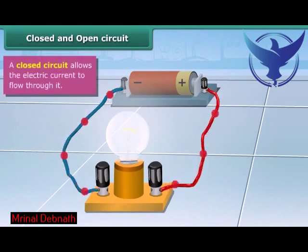If you see both the wires are connected to both the terminals. It is an unbroken path. It is a closed circuit.